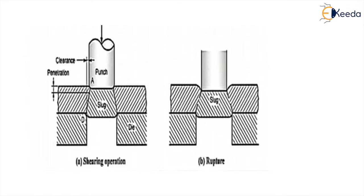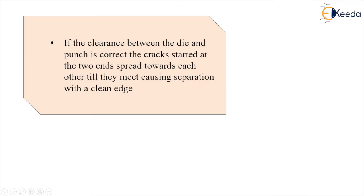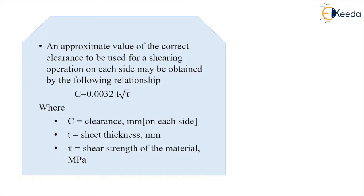It may happen that the cracks do not meet each other. These two cracks meet together within the sheet because of the provision of optimum clearance. Clearance is a very important thing — it is clearance that causes the two cracks to meet. The optimum value of clearance is C = 0.0032 × t × √τ, where t is thickness and τ is the shear strength of the material, which is used in the punch and die to ensure the meeting of the two cracks.